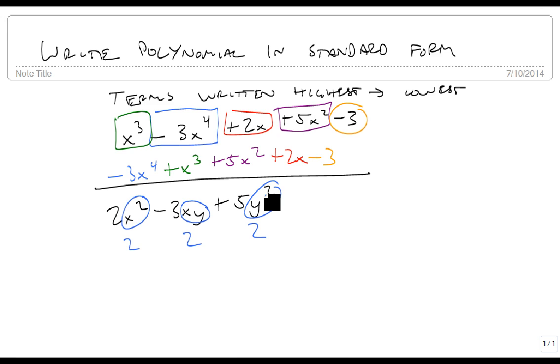Okay, as our last example, suppose we have 3ab cubed, plus 2a squared b squared, minus 3a cubed b, minus 2ab, plus a squared b.